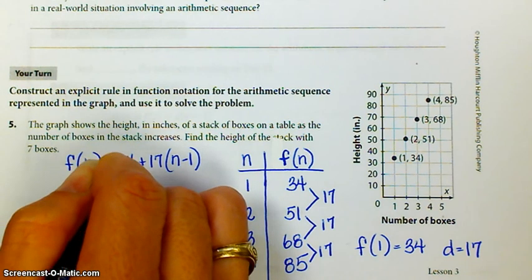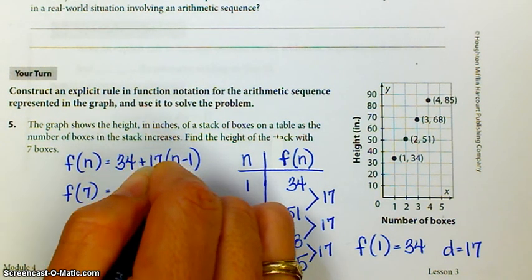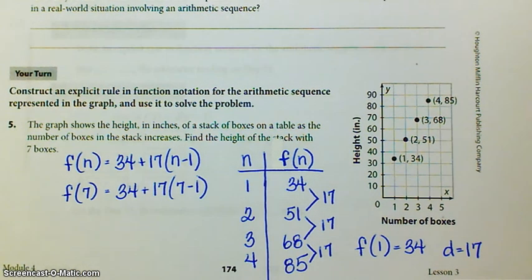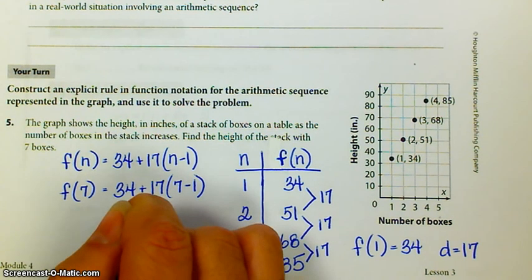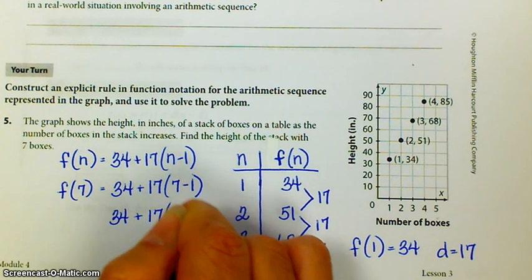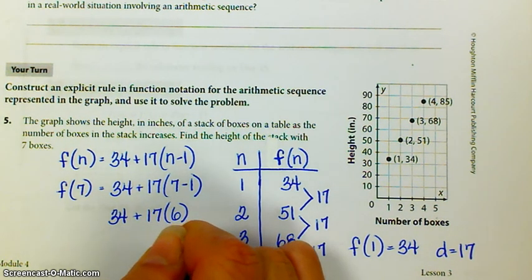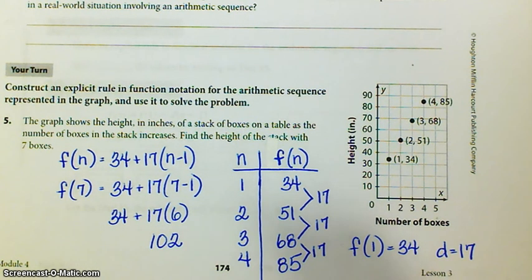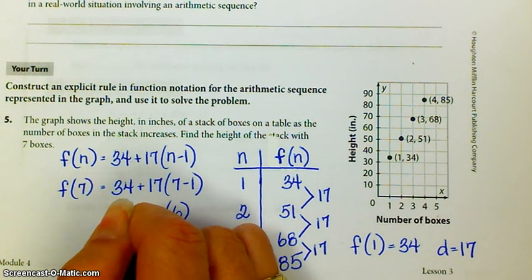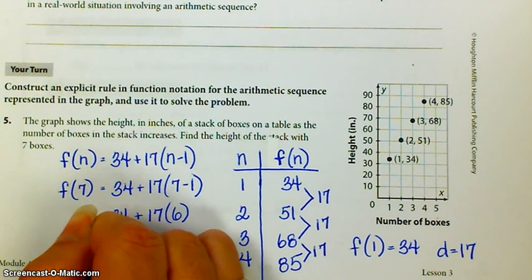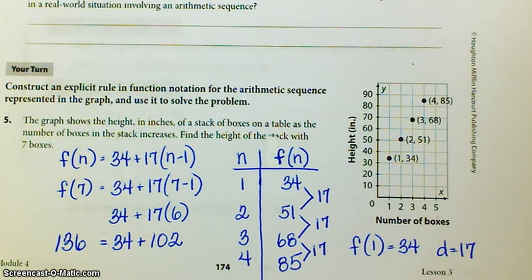So f of 7. That's really 34 plus 17 times 6. 17 times 6 is 102, because 15 times 6 is 90 plus another 12. Plus 34. And you get 136. So the height of the stack with 7 boxes is 136 inches.